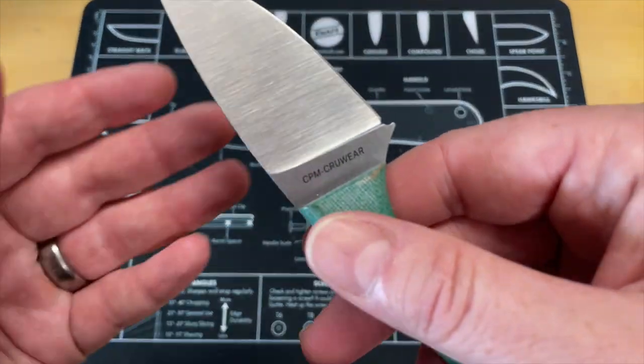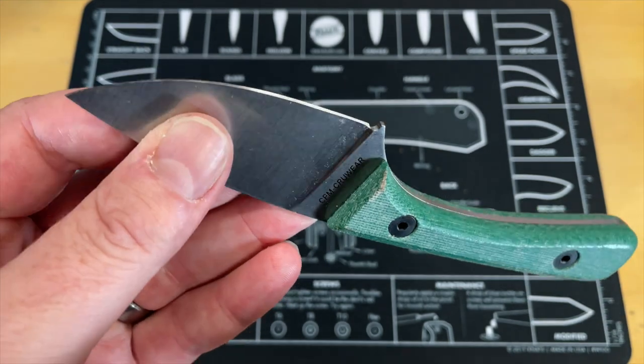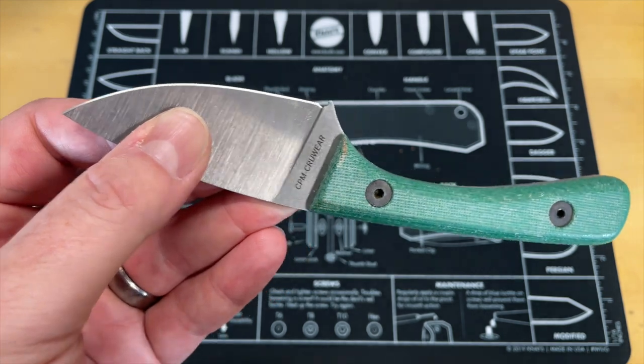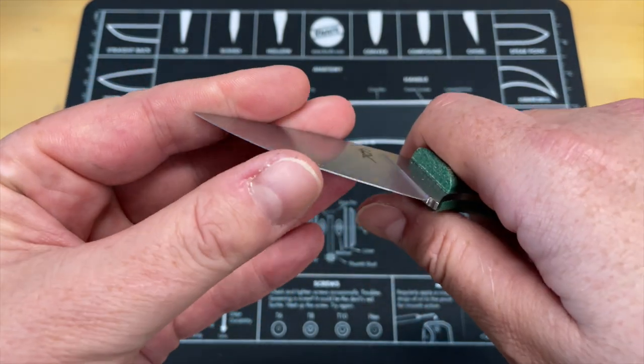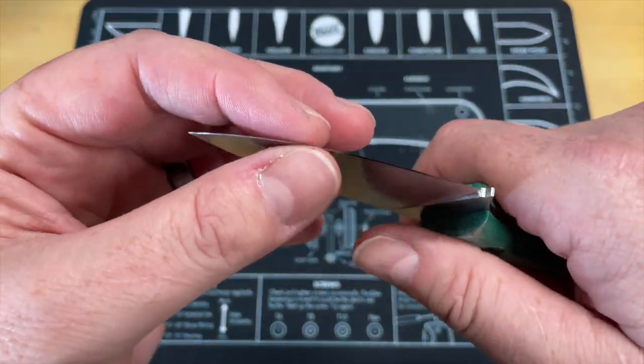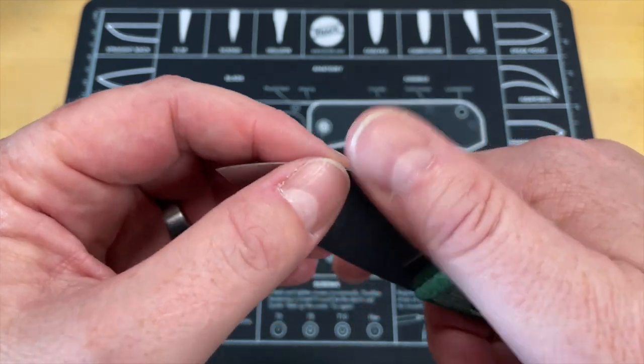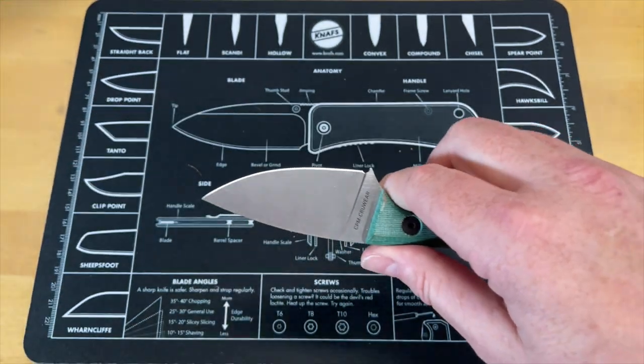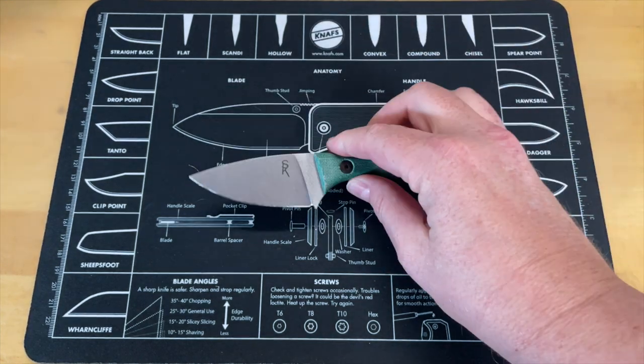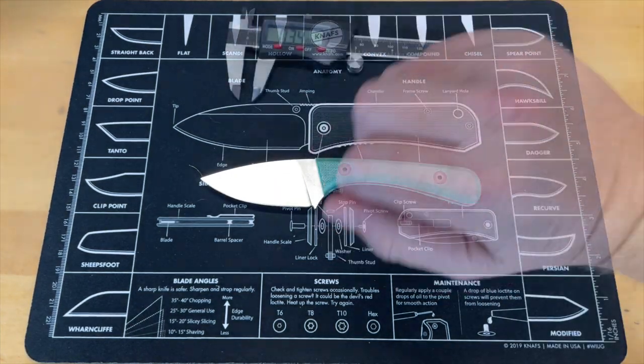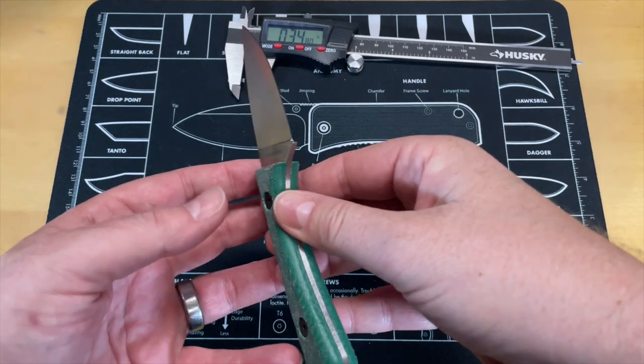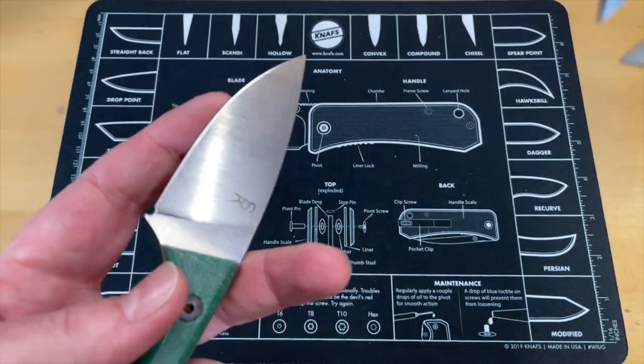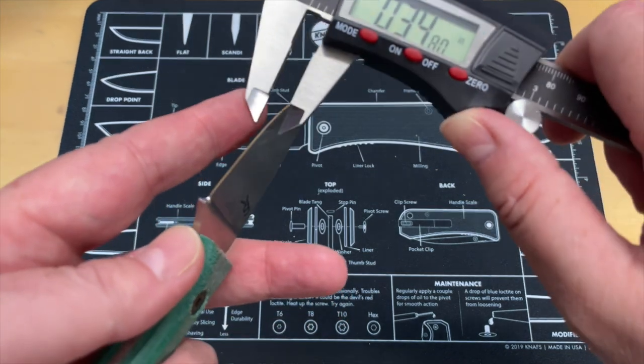This one is done in CPM Cruwear. Now I had to ask Alex because this Cruwear has held up better than any Cruwear I've ever used, and there's a couple reasons for it. This thing is super thin, guys. This thing is super thin behind the edge for a fixed blade knife. Alex is known for talking about the thing that I always talk about too, which is not just the edge geometry but the behind-the-edge and blade geometry.